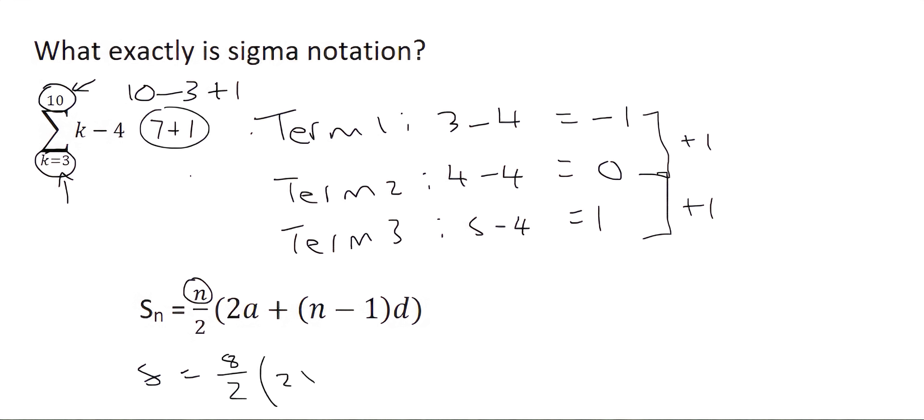So that's going to be 2 times. A is term 1, so that's minus 1. Plus your number of terms is 8 minus 1, and the difference between each number is 1. Throw everything in on the calculator, and what you'll get is your answer will be 20. So if you had to add all of those numbers all the way up to the 8th term, you would get a total answer of 20.